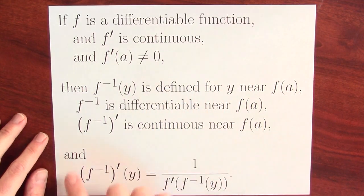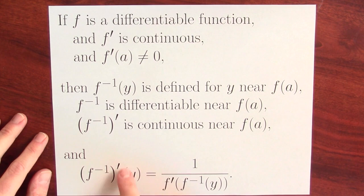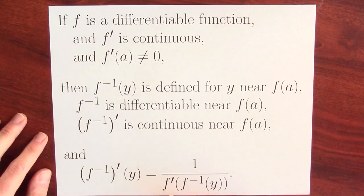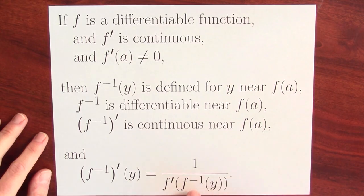And I've even got a formula for the derivative. The derivative of the inverse function at y is 1 over the derivative of the original function, evaluated at the inverse function of y.